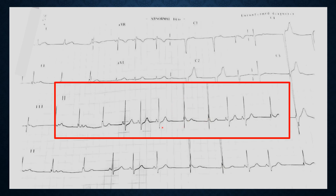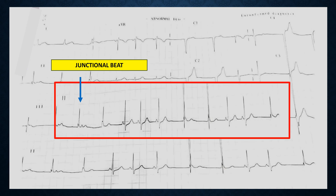We see a different looking QRS complex in some beats. This is a sinus beat — basically a P wave preceding the QRS and conducting smoothly down the conduction system. The other beat is a junctional beat because we can't see a P wave preceding that QRS complex, meaning the P wave is not driving the circuit. The morphology is also different and there is no P wave.